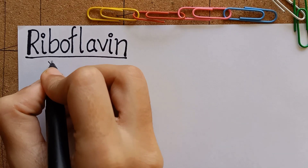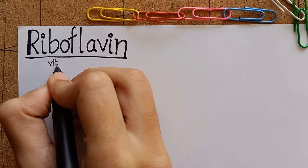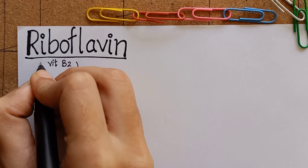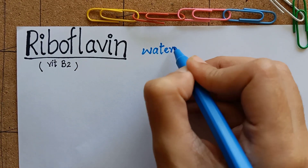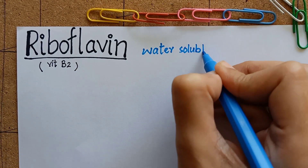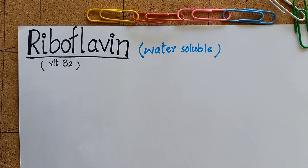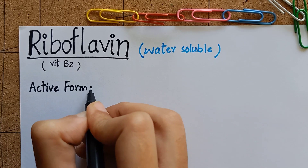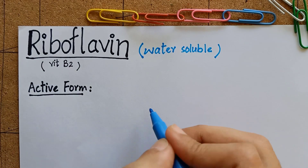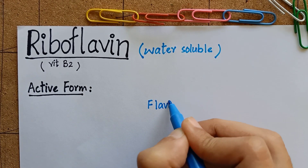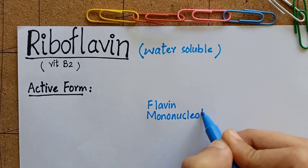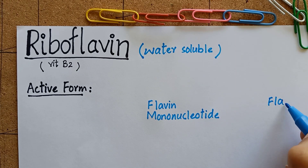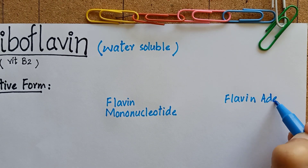We are going to learn about riboflavin, which is vitamin B2. Riboflavin is a water-soluble vitamin. It has two biologically active forms, which are flavin mononucleotide and flavin adenine dinucleotide.